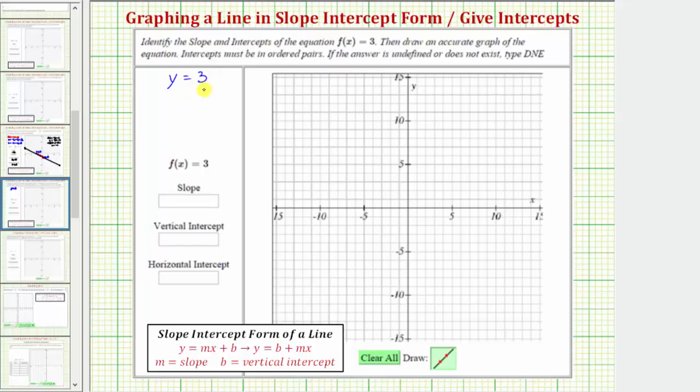Now if we compare this equation to slope intercept form, which is the form y equals mx plus b, where m is the slope and b is the vertical intercept, we could write an equivalent equation in the form y equals zero x plus three. Notice how this is still y equals three, but in this form, we can easily recognize that m equals zero, so the slope is equal to zero, and b, the vertical intercept, is equal to positive three.